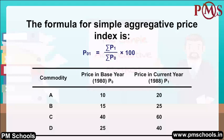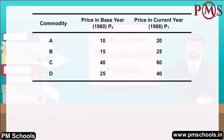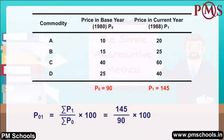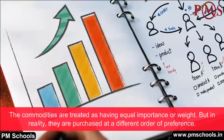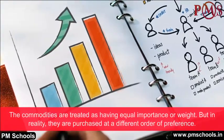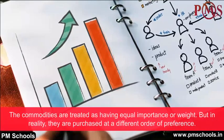The aggregative method is an unweighted measure because it does not clearly reflect the relative importance of the commodities. In the example given, P1 is 145 while P0 is 90, giving P01 equal to 161.11, which shows that prices have risen by 61.11%. The commodities are treated as having equal importance or weight, but in reality they are purchased at a different order of preference.